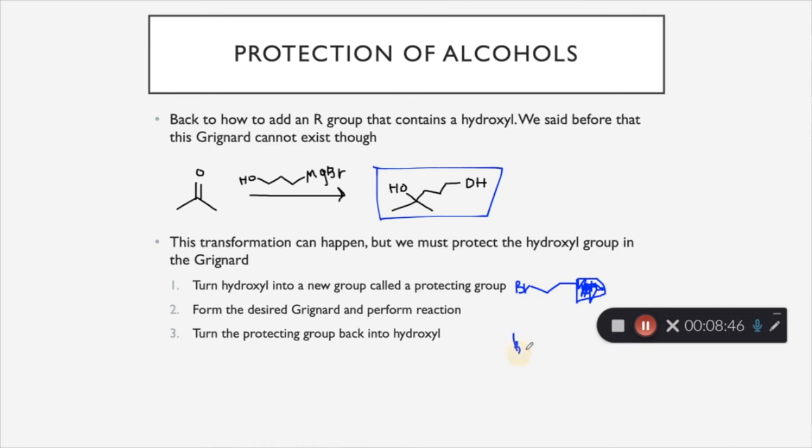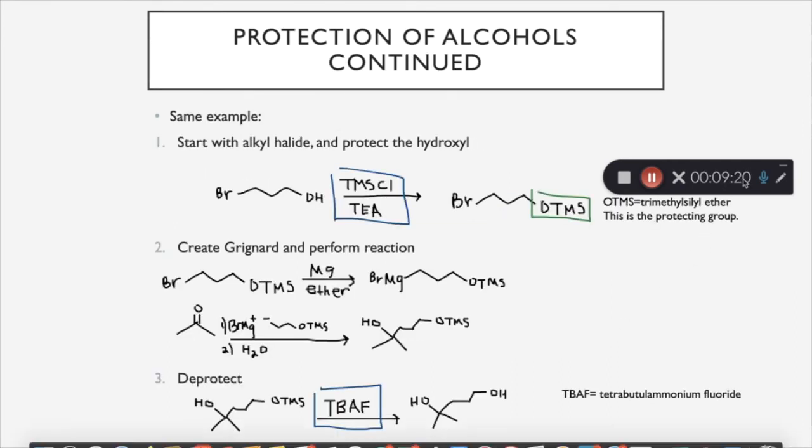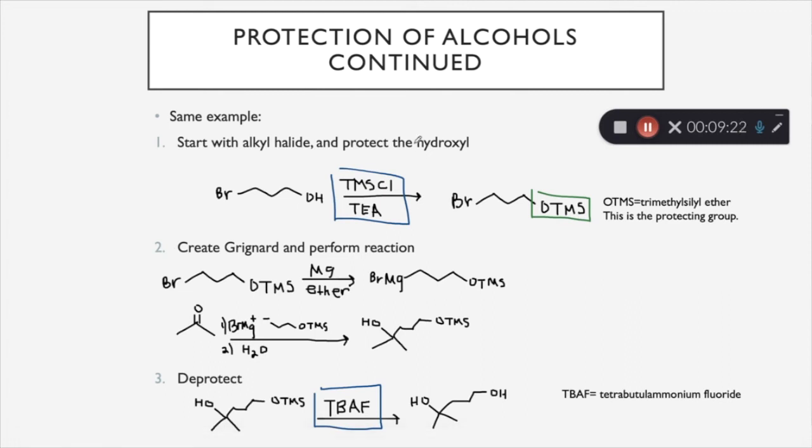And then you're going to form the desired Grignard and perform the reaction. So the next step is to form the desired Grignard. And then one, two, three, and then we still have our protecting group. So that was step two. And then you would perform your reaction. And then at the end, once you have the product that you want, it still has that protecting group on there. So the next step is going to be to turn that protecting group back into a hydroxyl.